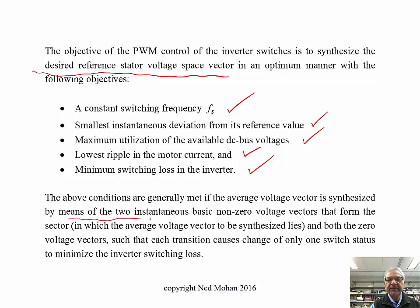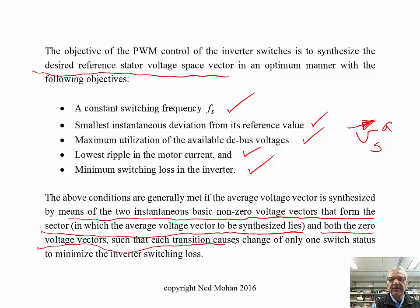But in general, it's synthesized by means of two instantaneous basic non-zero vectors that form the sector in which the average voltage space vector is to synthesize. We also make use of the zero voltage vectors, such that transition causes only one switch status to change, to minimize the inverter switching loss. So all that would happen as we describe in the switching scheme later.